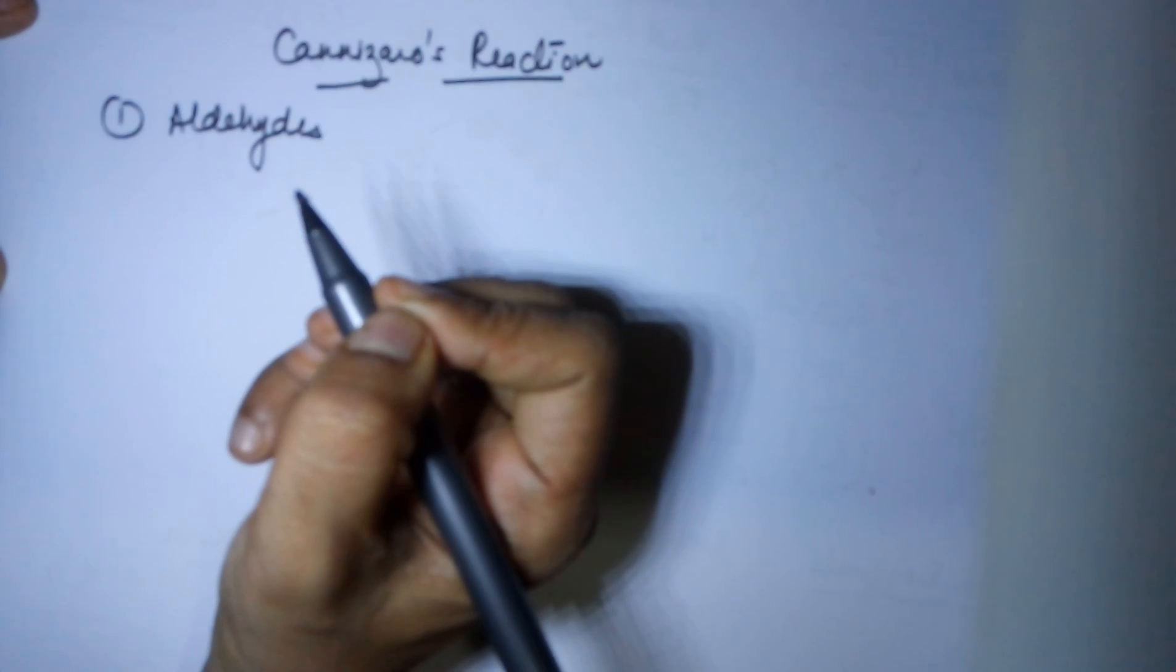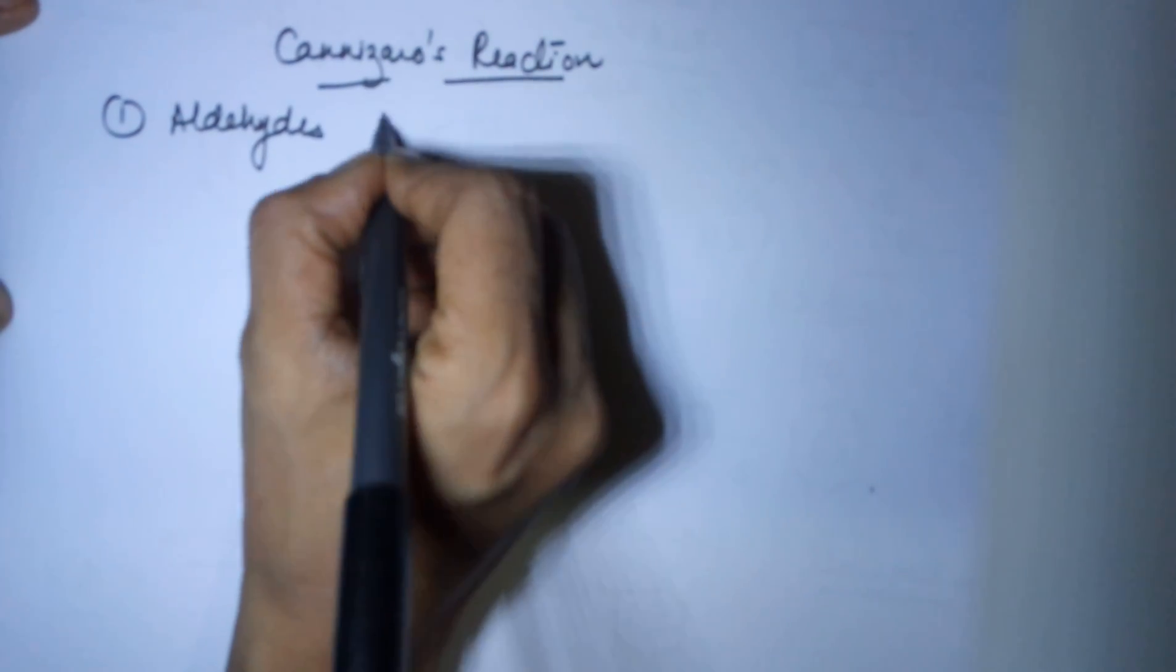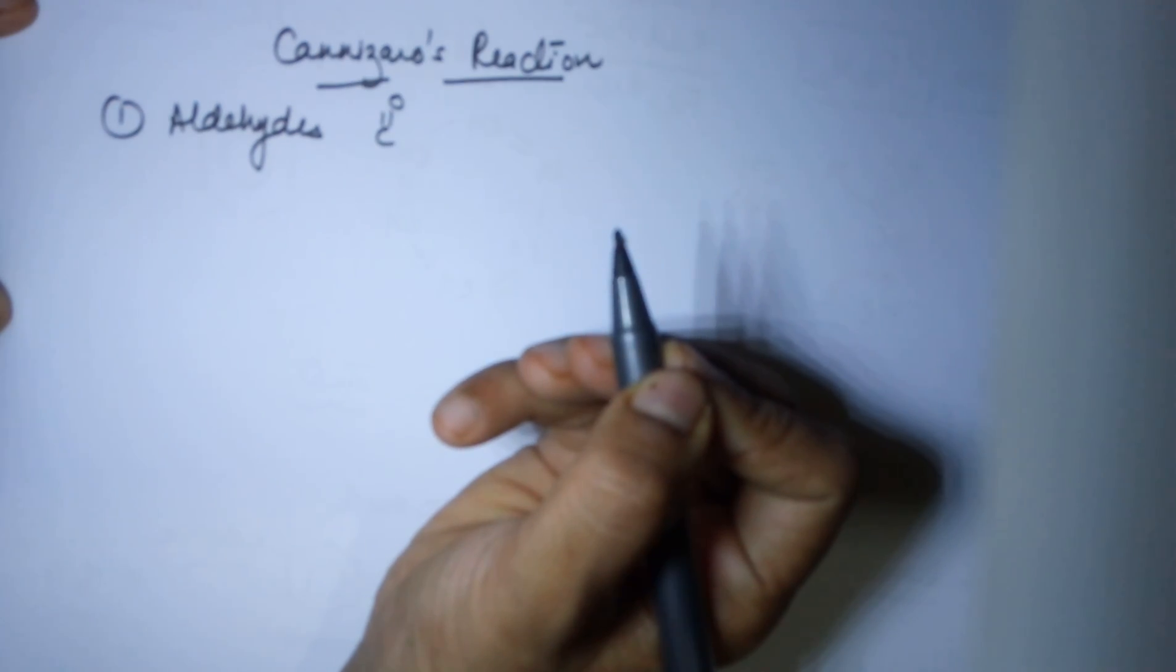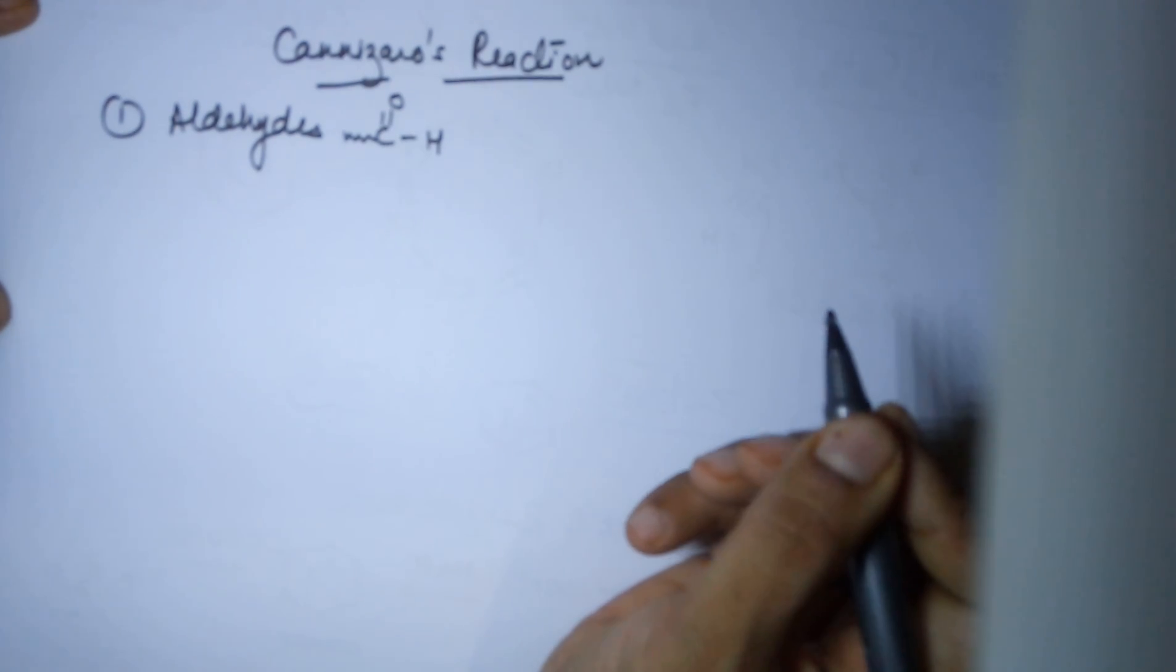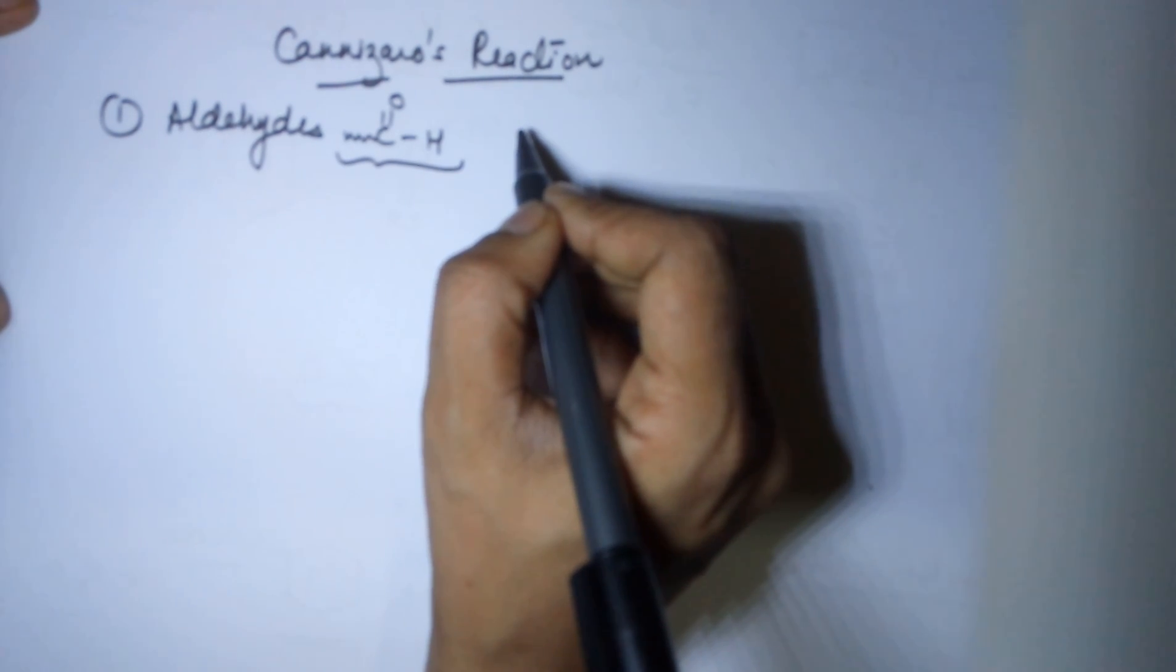Now which type of aldehydes? And before I go to that, I hope you're aware an aldehyde is a group which has a C double bond O and an H. The other side it could have an H, it could have an R group also. Now an aldehyde group we don't want it to have an alpha hydrogen.